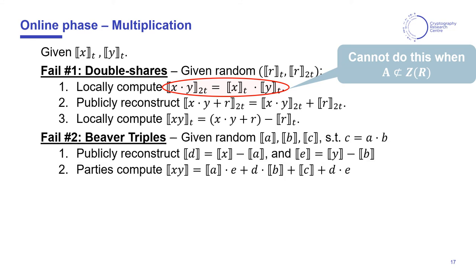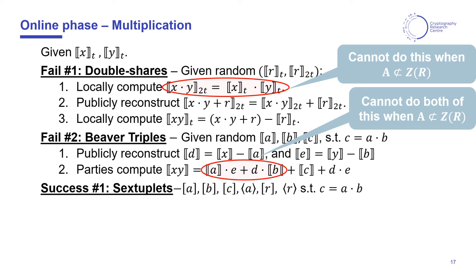The second approach uses beaver triples, for which we do not rely on the multiplicative property of the secret sharing scheme. Nevertheless, this approach also fails if the evaluation points are not in the center of the ring, since that is the only way we can have a bimodule.